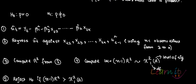From this regression — the auxiliary regression — you are regressing û_t against a constant, xt2, xt3, and so on to xtk, and û_{t-1}. You will save R-squared from this regression.